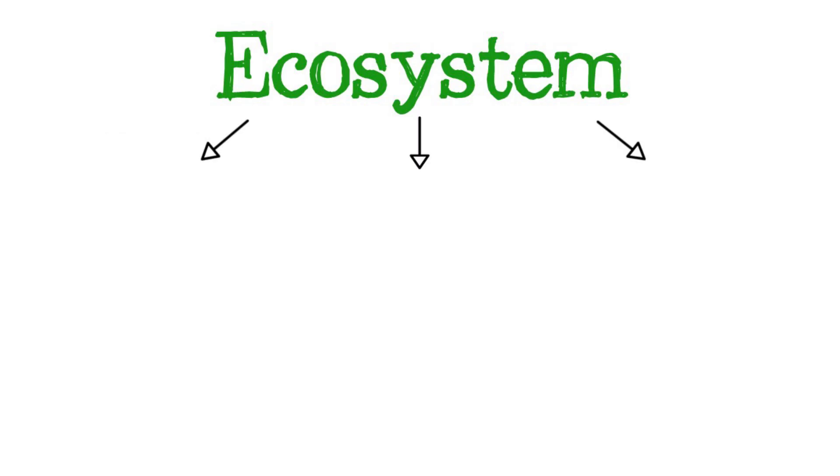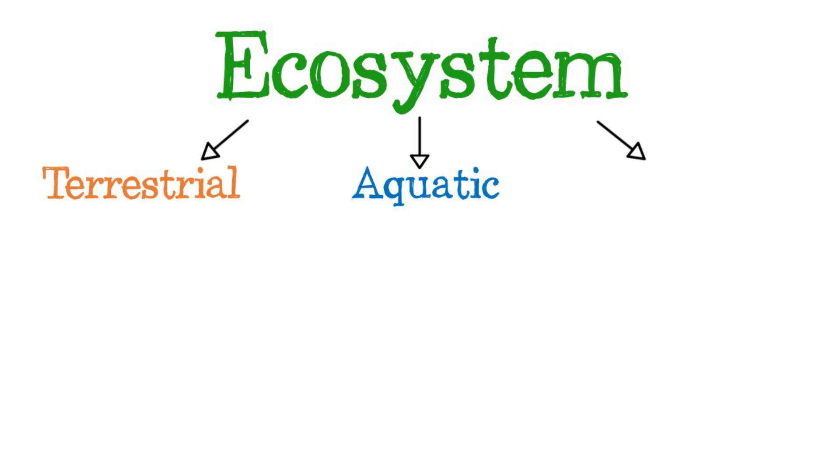There are three types of ecosystems: terrestrial, aquatic, and mixed ecosystems. Terrestrial ecosystems,